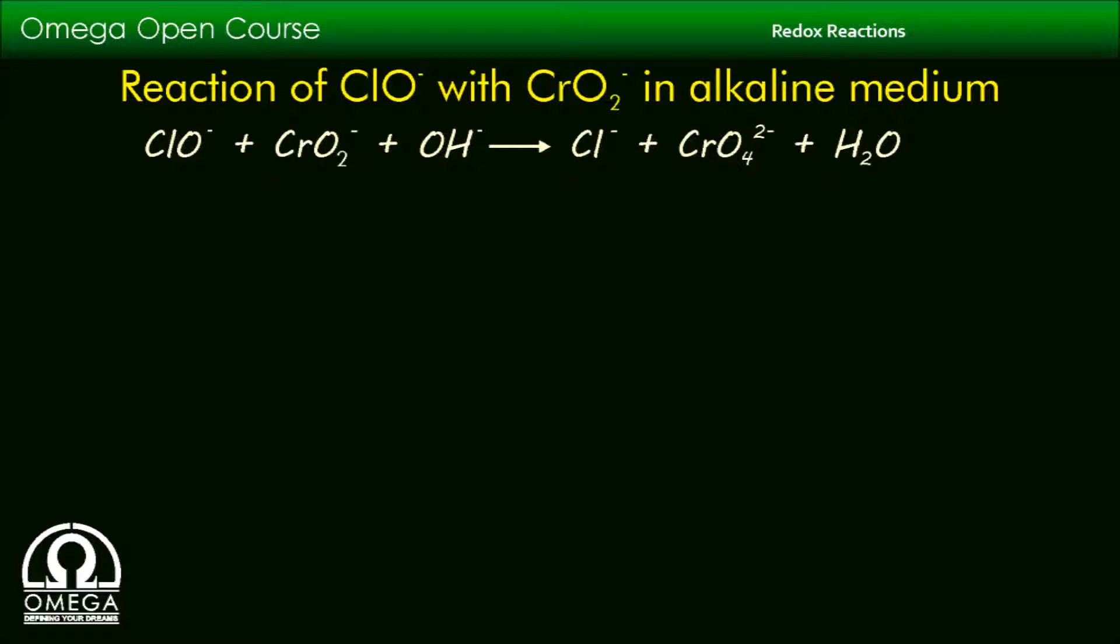First, let us find out the oxidation number of all the atoms in reactants as well as products. Oxidation number of Cl atom in ClO⁻ is +1 and that in Cl⁻ is -1.